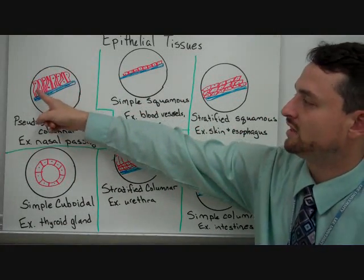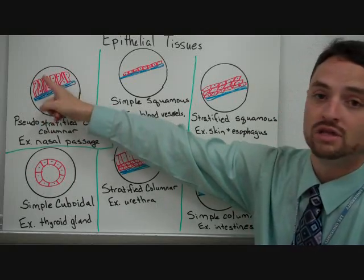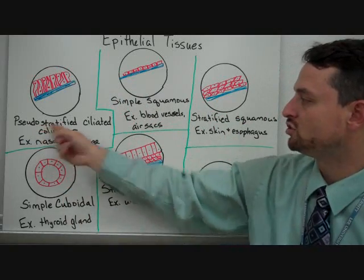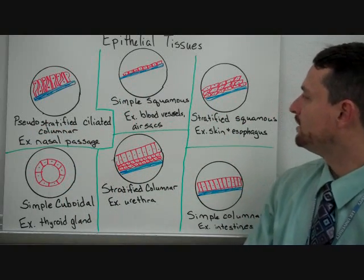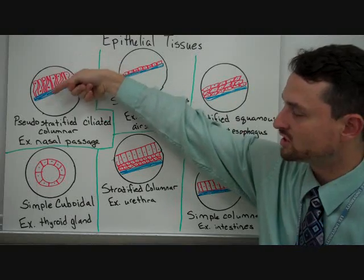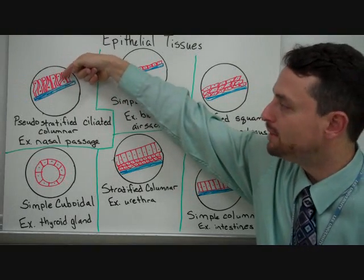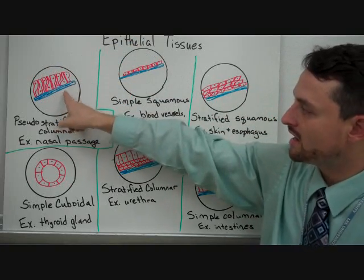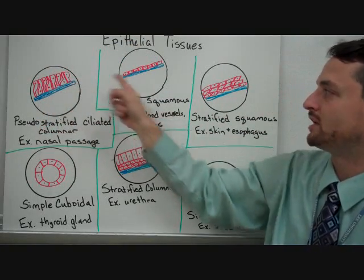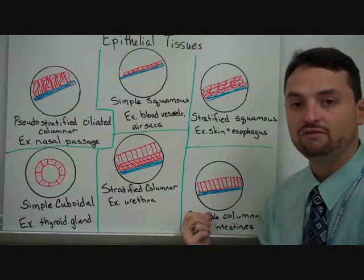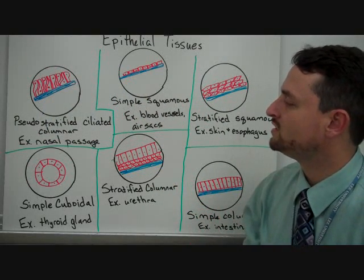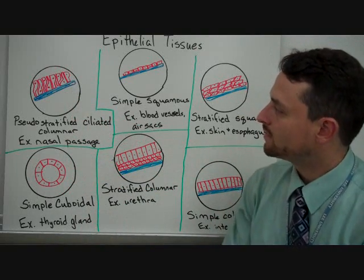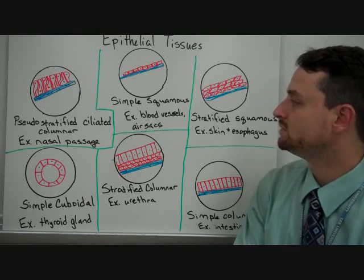For these, you can see they're columns, but they're not just straight up — which is where you get the pseudostratified. Stratified means several stacks. This looks like multiple layers, but it's actually not multiple layers; it's just one cell that goes all the way to the top, and they're attached to this basal membrane. You see these primarily in the nasal passageways.